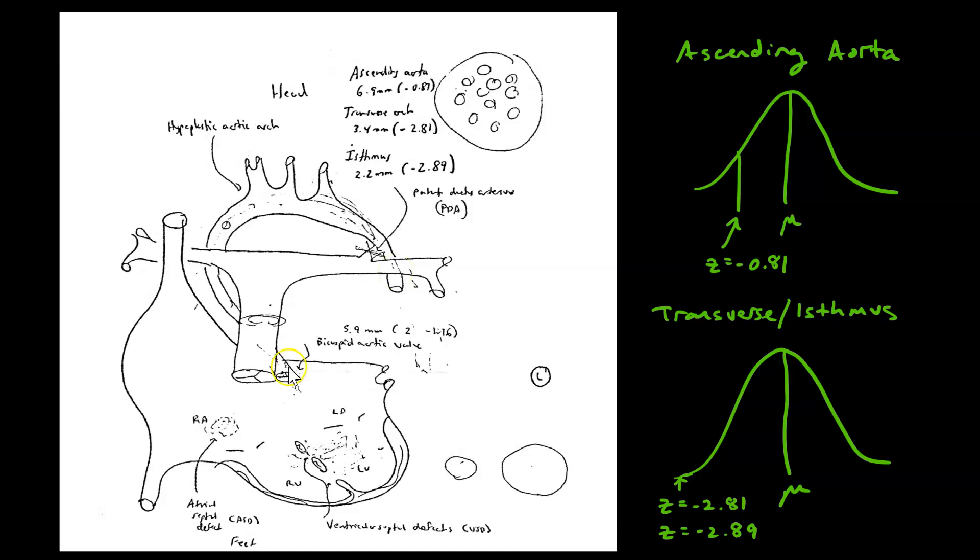In some ultrasounds in utero, they found that Eliza's aorta was a little bit narrow compared to the rest of the population. They were using things like the empirical rule and z-scores in their calculations.